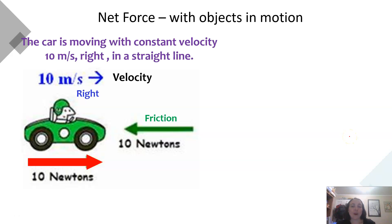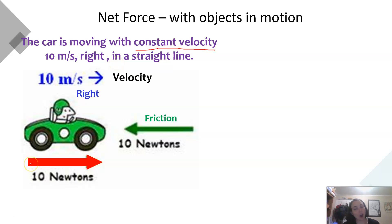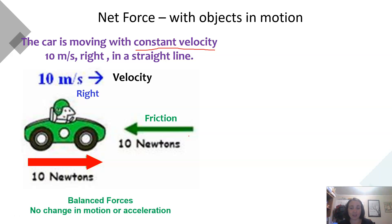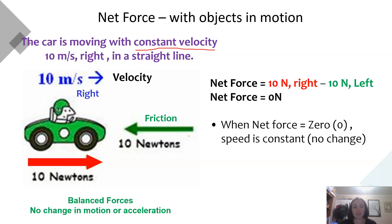Finally, when net force equals zero, it doesn't mean there's no motion at all — there can still be motion. For example, a car moving at a constant velocity of 10 meters per second to the right has the engine pushing 10 newtons forward while friction pushes 10 newtons back. These forces are balanced: 10 newtons minus 10 newtons is a net force of 0, so velocity stays constant. It's important to remember that an object can still be moving even when forces are balanced.